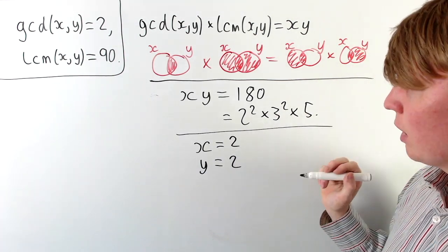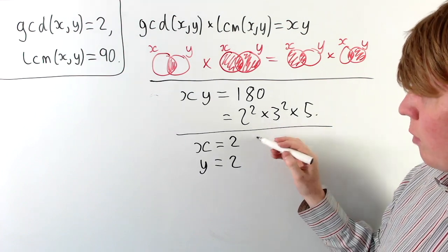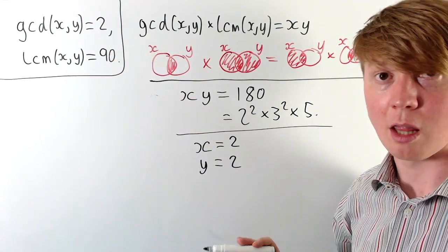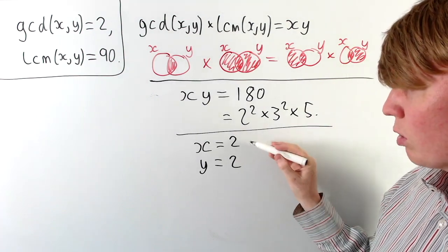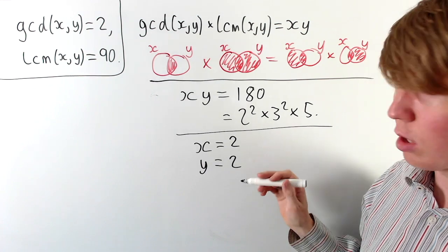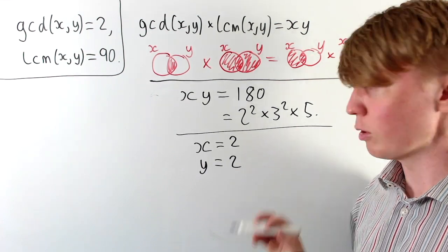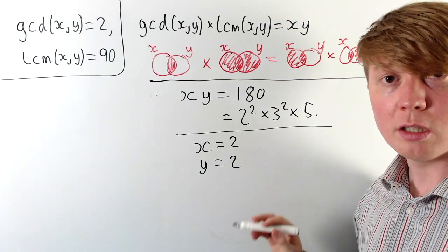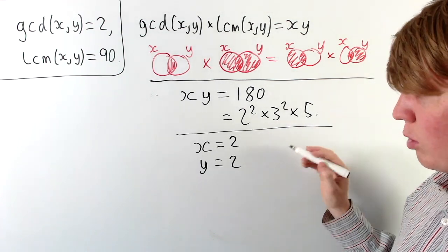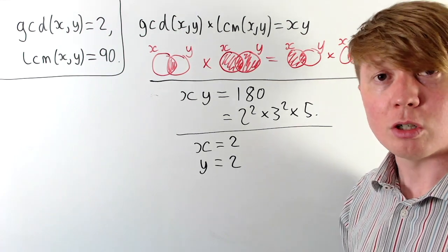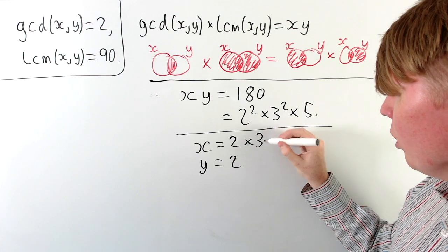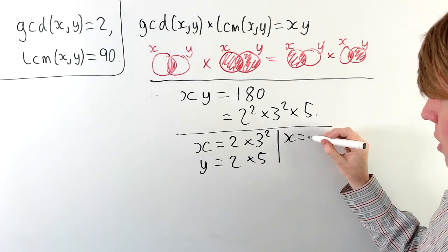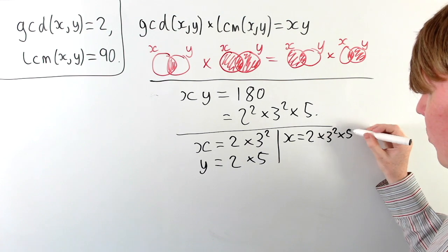Now we think about the 3s and the 5. For the 3s, if we give one 3 to x and one 3 to y, the greatest common divisor would actually be 6 or larger — which is wrong. So the only option is to give both 3s to x, or both 3s to y. For the 5, we simply give it to either x or y without causing issues. So one option is x equals 2 times 3 squared, and we give the 5 to y; or x equals 2 times 3 squared times 5.